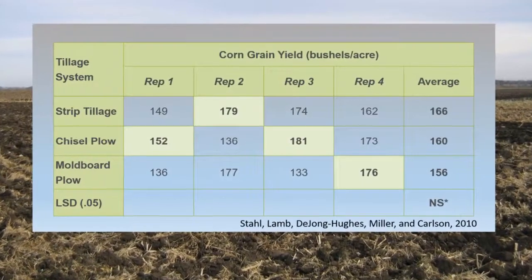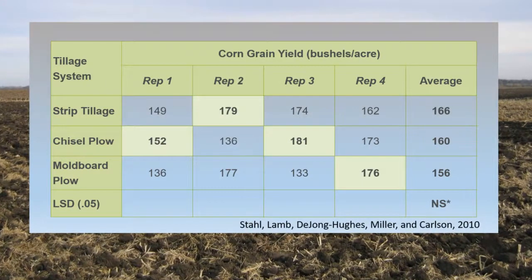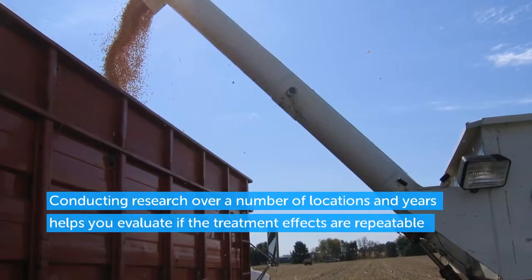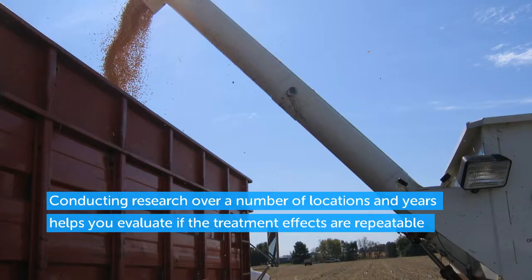Closer examination of the data shows how much variability was found in yield among the treatments. Each column of data represents a replication or rep of the treatments, and the shaded areas represent the highest yielding treatment within a rep. Note that while strip tillage out yielded moldboard plow in the first rep by 13 bushels per acre, moldboard plow out yielded strip tillage by 14 bushels per acre in the fourth rep. Also, chisel plow was the lowest yielding treatment in rep 2, while it was the top yielding in reps 1 and 3. Due to this variability, we couldn't say with confidence that any of the tillage systems resulted in a higher yield than another at this site. Other factors we couldn't account for appeared to have impacted results, highlighting the value of conducting research over a number of locations and years.